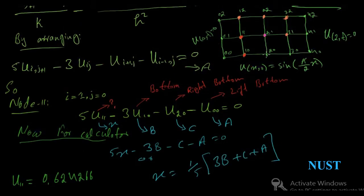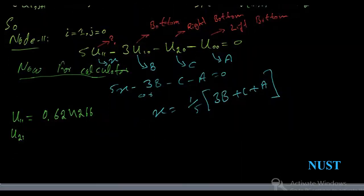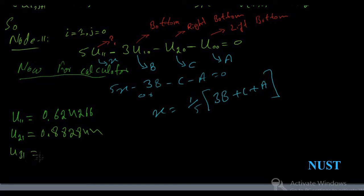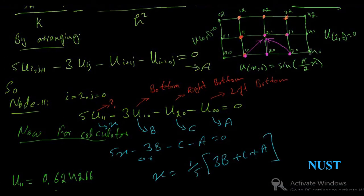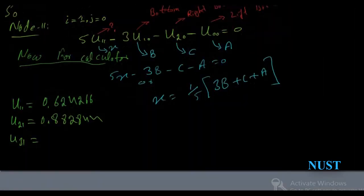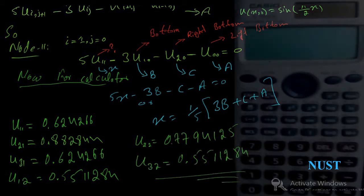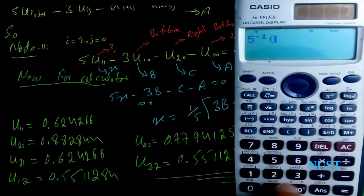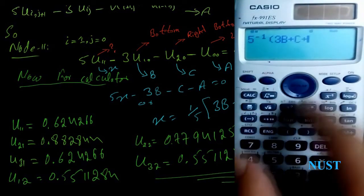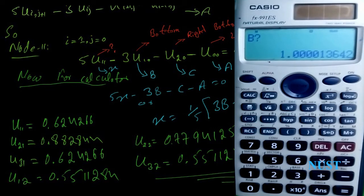To find node 21, we need to know node 20, node 30, and node 10 — these are known from the initial and boundary conditions. Using these three known values, we can find point 21. Keep in mind that the bottom is B, right bottom is C, and left bottom is A. Similarly for point U31, the three known points are U20, U30, and U40, and so on. Type the governing equation for the unknown parameter X in terms of A, B, and C, and use the same equation for the rest of the points.